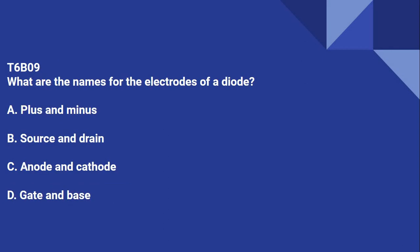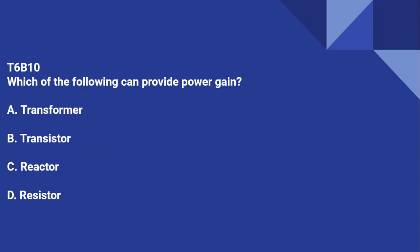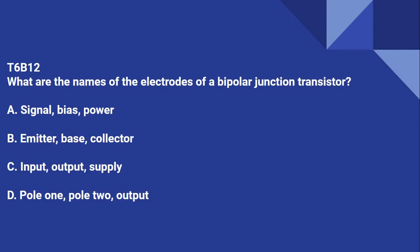T6B09: What are the names for the electrodes of a diode? Anode and cathode. T6B10: Which of the following can provide power gain? Transistor. T6B12: What are the names of the electrodes of a bipolar junction transistor?